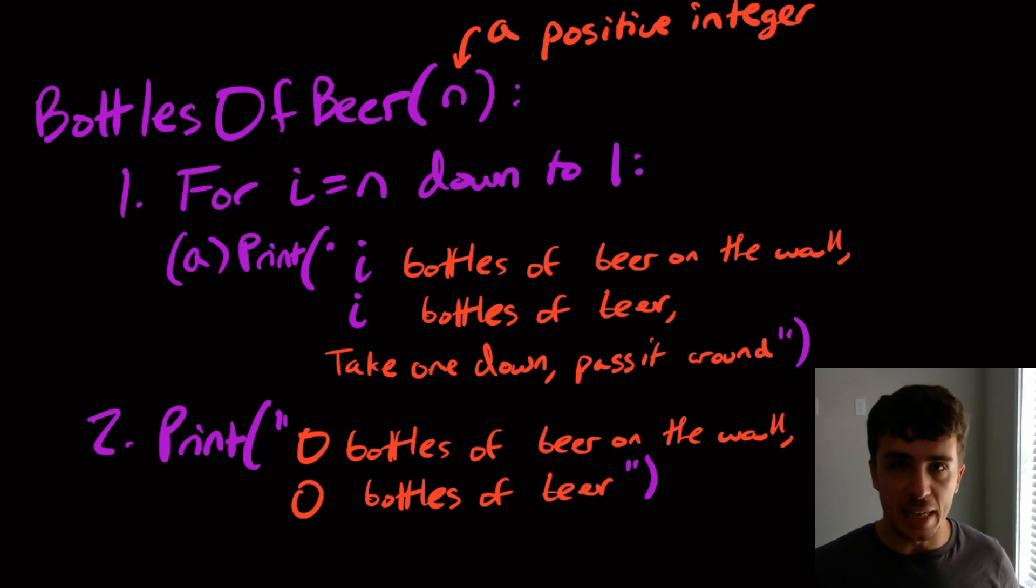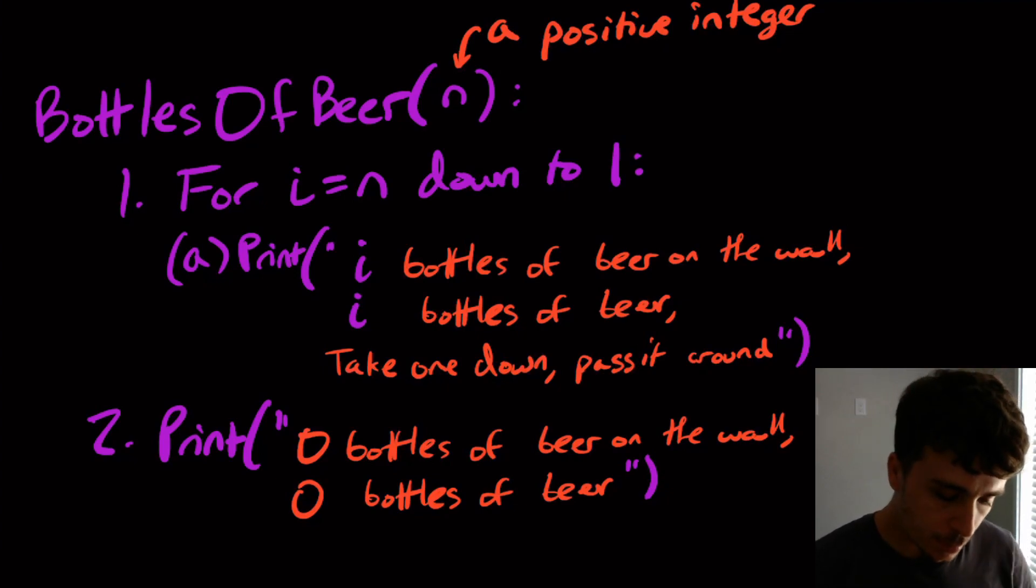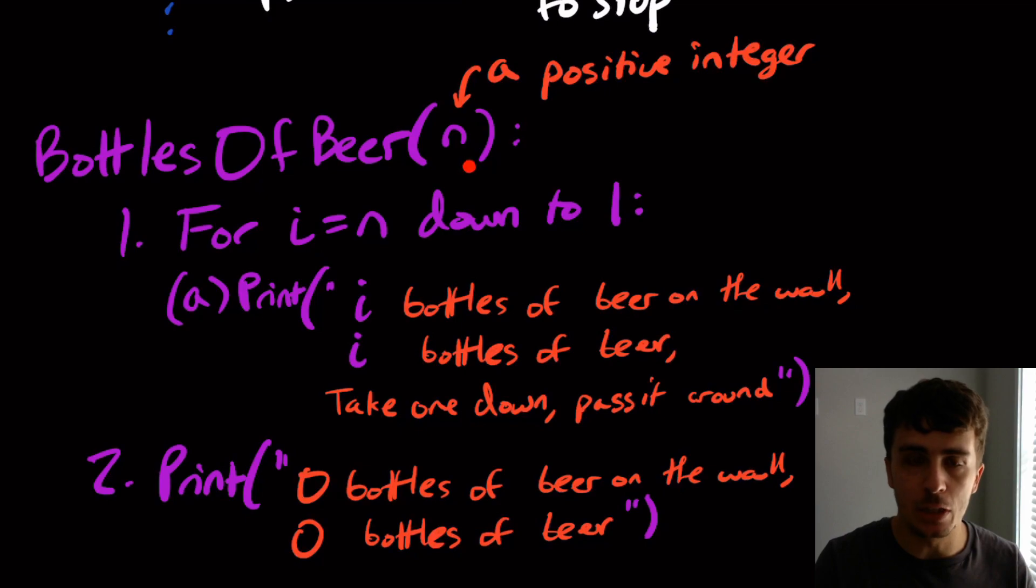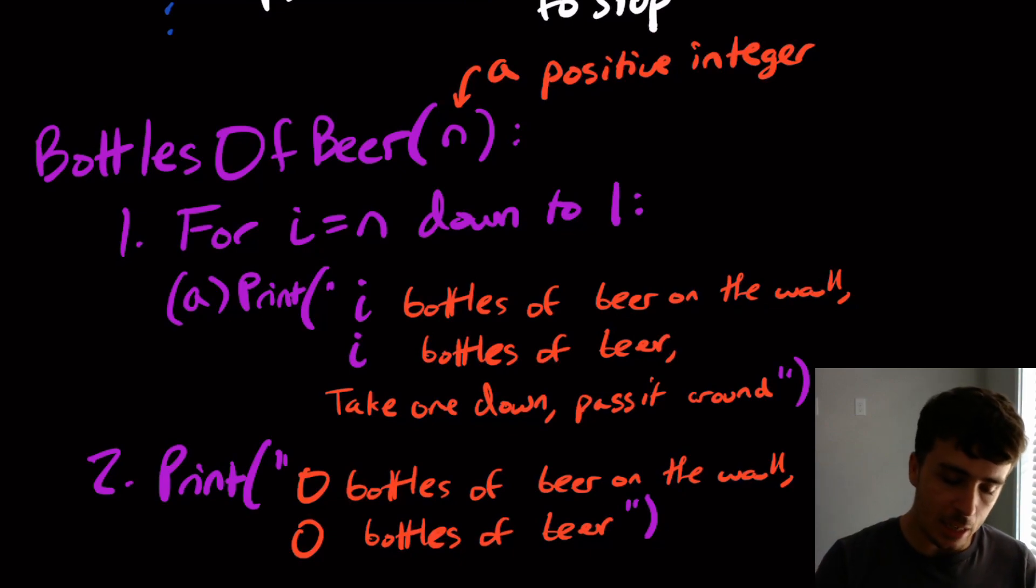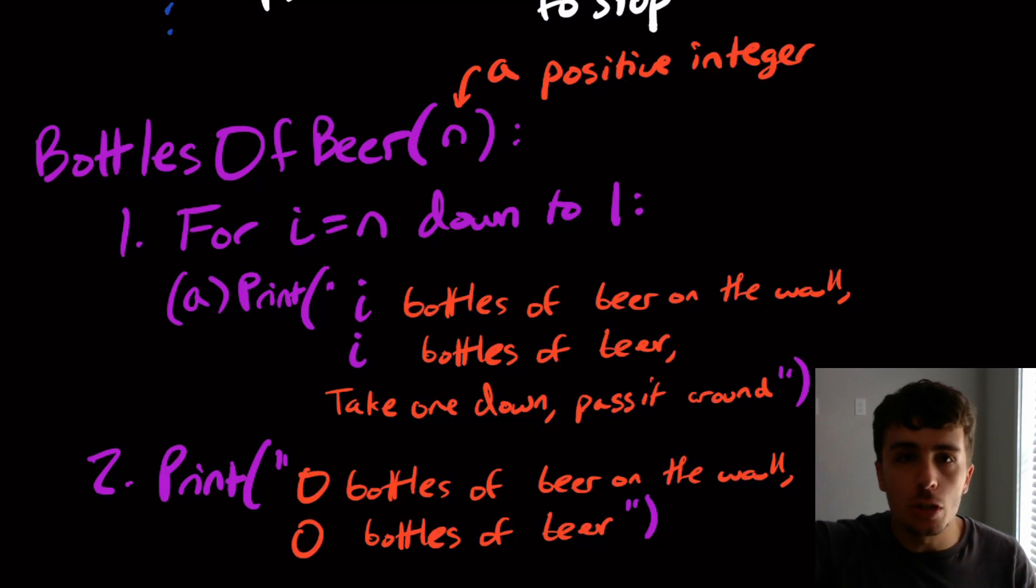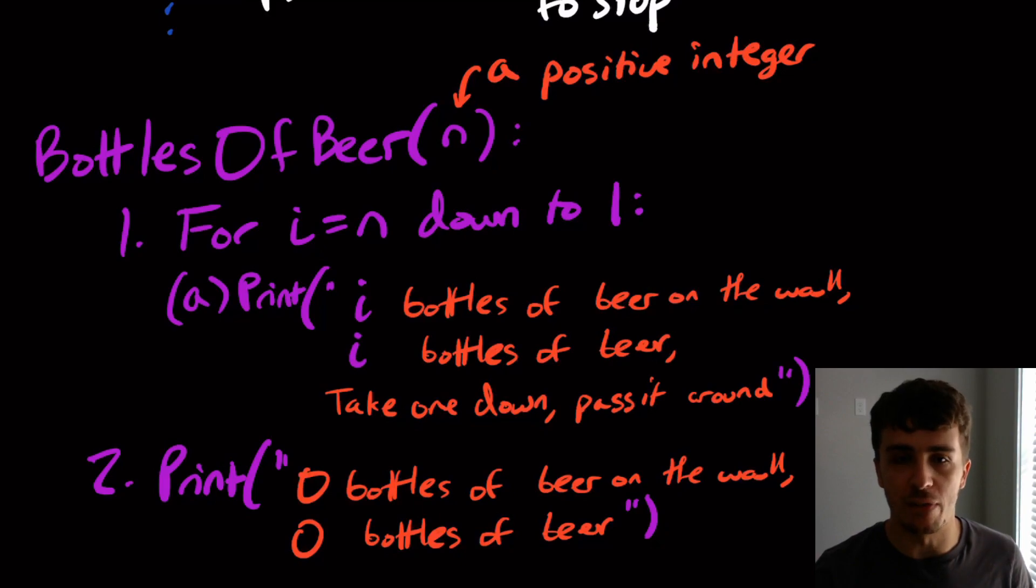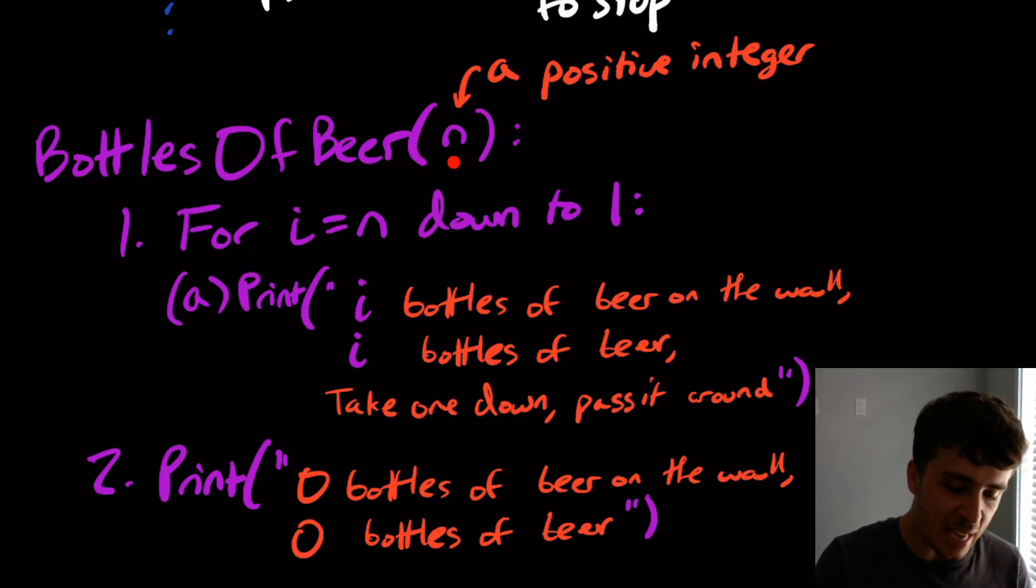And is this an algorithm, which is something that we should always ask. And I guarantee it is because the input here is a positive integer. So if this is a positive integer, it's some finite number. And we start at this number and work our way down to one, one at a time. So eventually, we will hit one at some point because we just keep subtracting it over and over. And so the for loop stops. And the print at the end obviously runs in a finite amount of time. So this is an algorithm that runs in a finite amount of time.